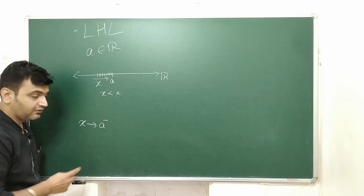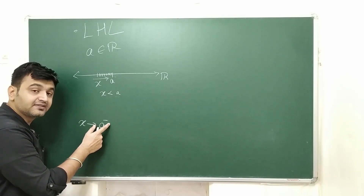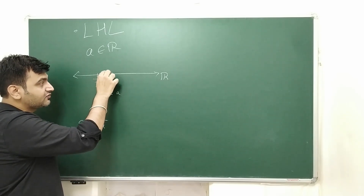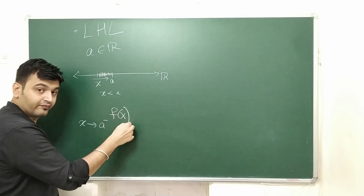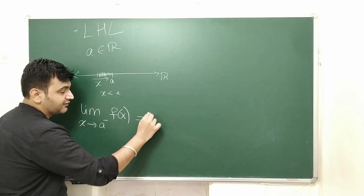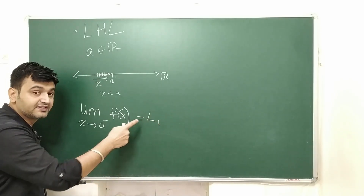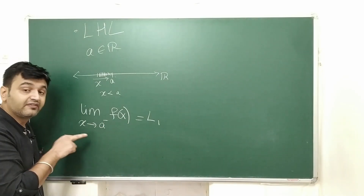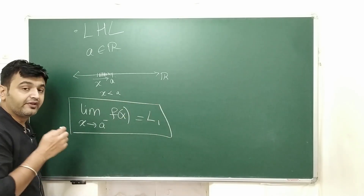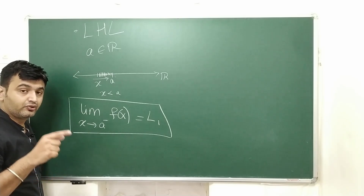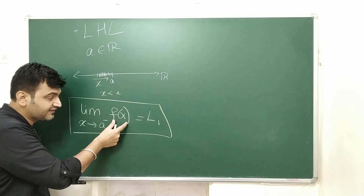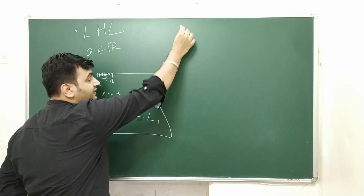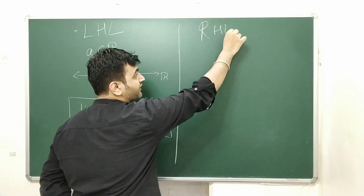When X is approaching a from the left hand side, instead of writing that in English, we give a minus sign at the top: X approaching a minus means X approaching a from the left hand side. In this scenario, you look at the images of those X and see where they approach. Suppose the images approach l1 — then l1 is called the left hand limit of the function f of X.